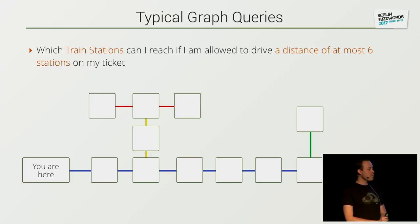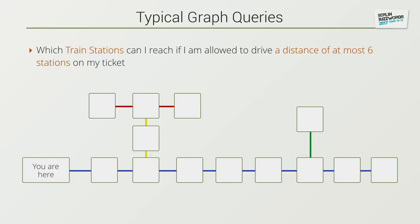What you can also do is, if you're standing at a train station and you buy a ticket, and this ticket says you can go up to six stations with me — where can you go? The graph database can easily give this answer: just go six steps and then stop. And you can even change lines if you want to — that is possible in the graph database.